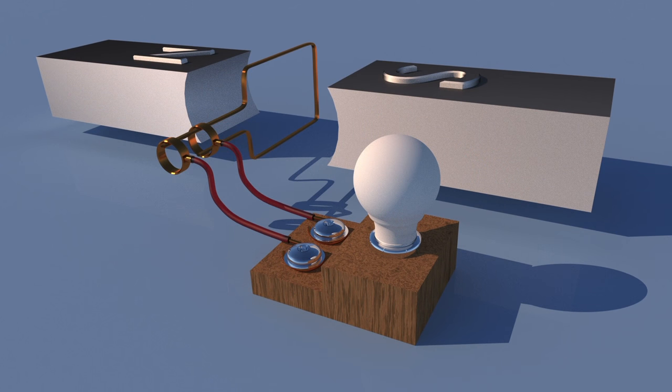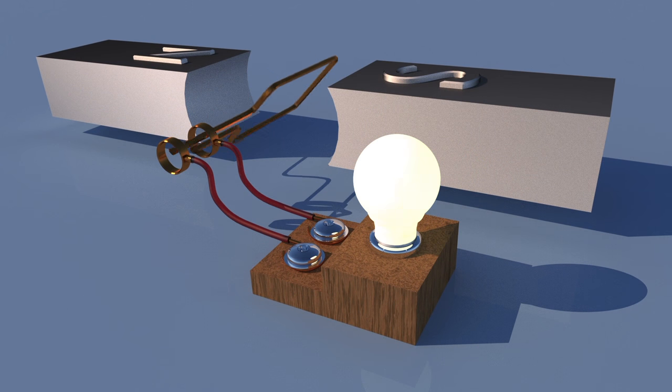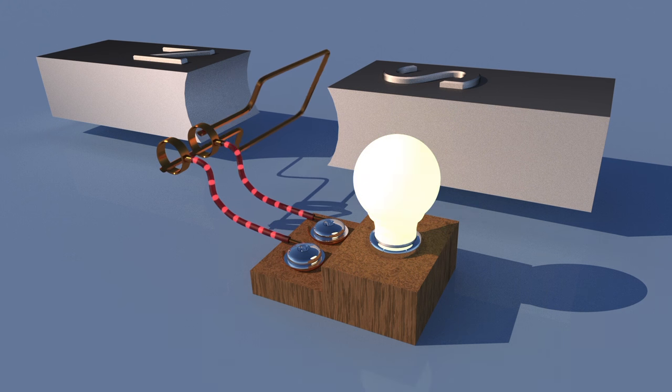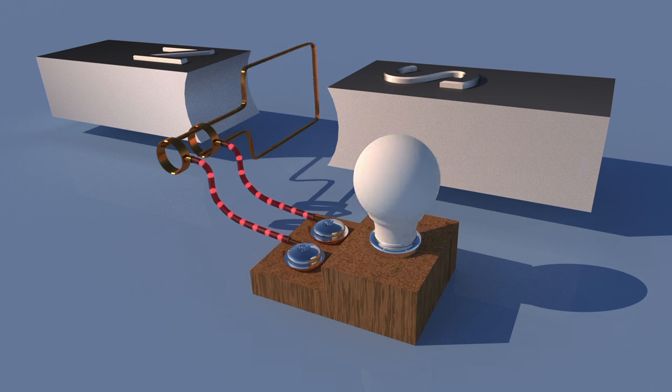The slip rings are on the ends of the conductor. They slide against the brushes as the conductor rotates. The current produced by the generated voltage flows through the brushes and then on through the circuit.